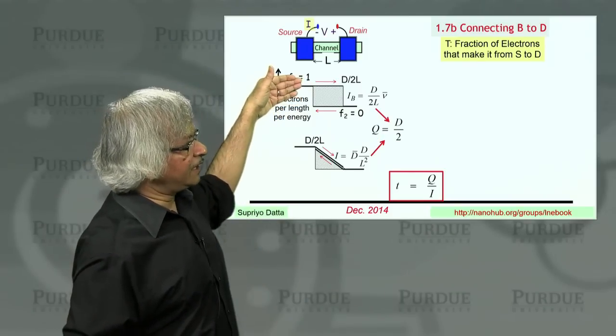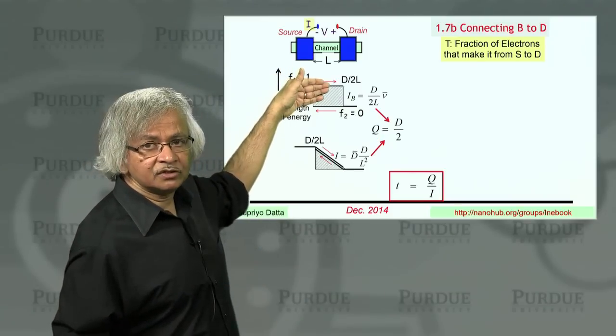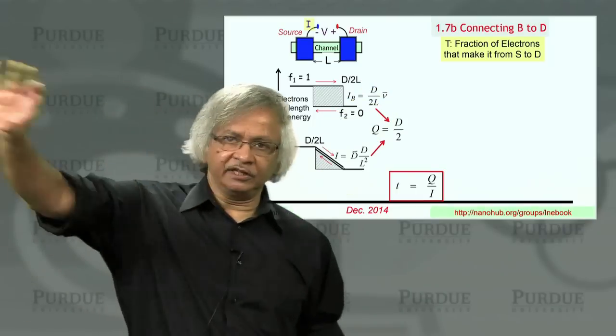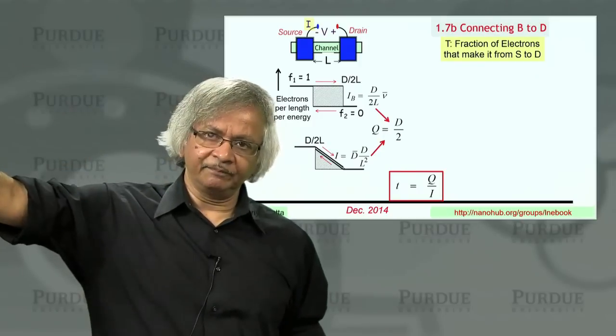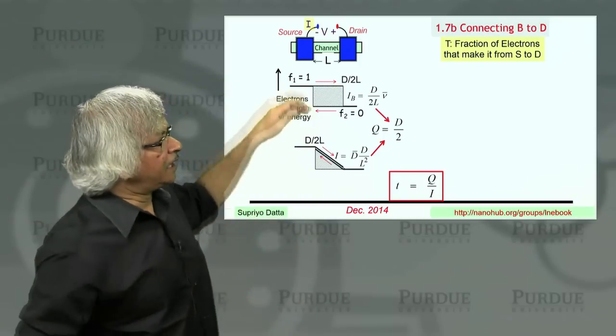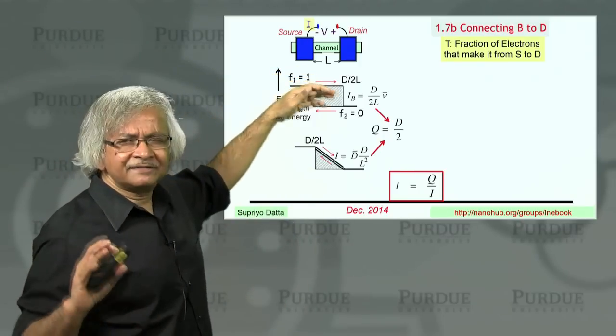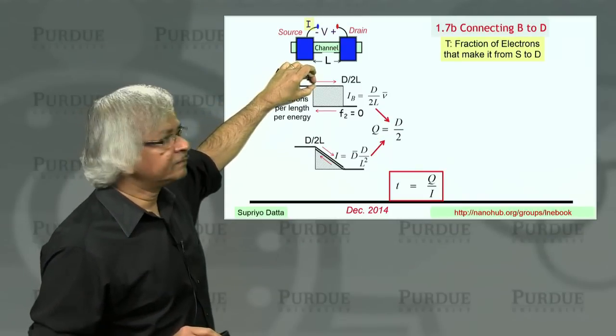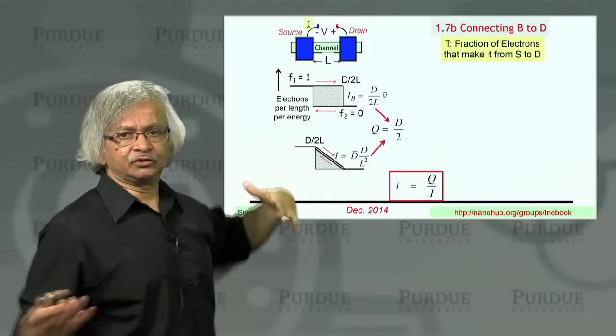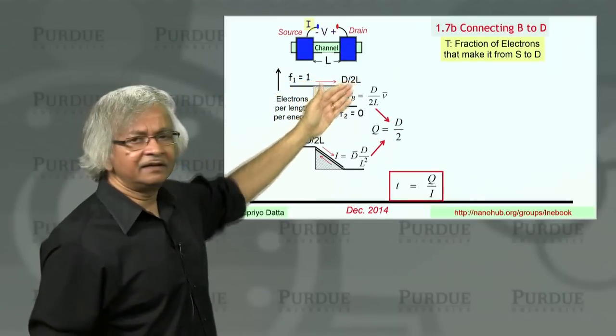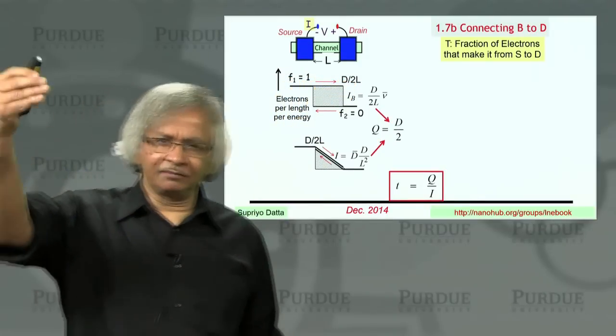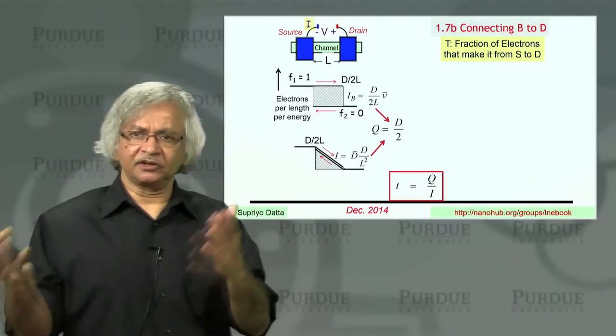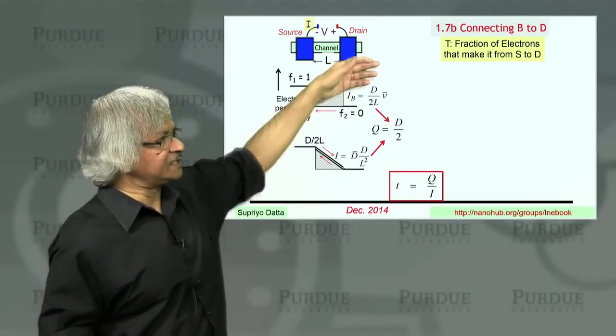In the ballistic case, any electron that came in from the source goes all the way to the drain, and that's why all the northbound lanes are completely filled all the way, steady state. Now let's assume that we have semi-ballistic transport. The electrons that come in from here, let's say 50 percent get through. By the time you come out at this end, the northbound lanes have become half filled, 50 percent, or 30 percent filled, or 70 percent filled. So that's this T.